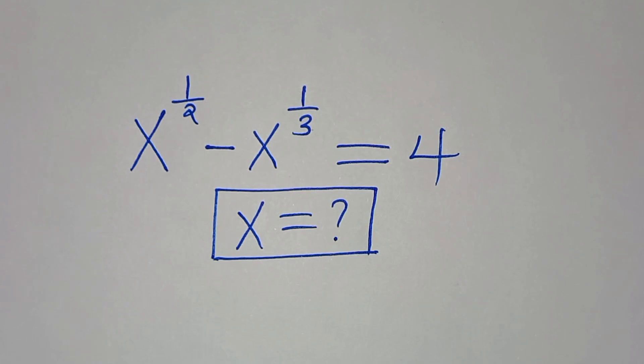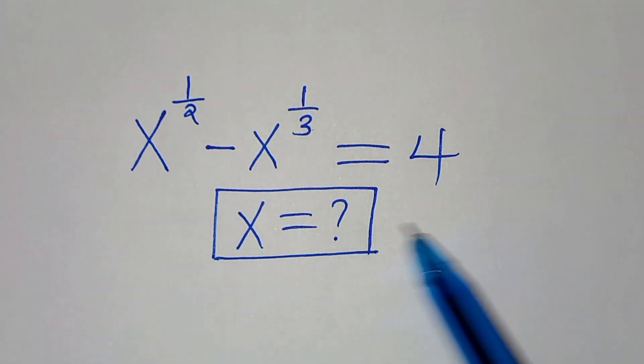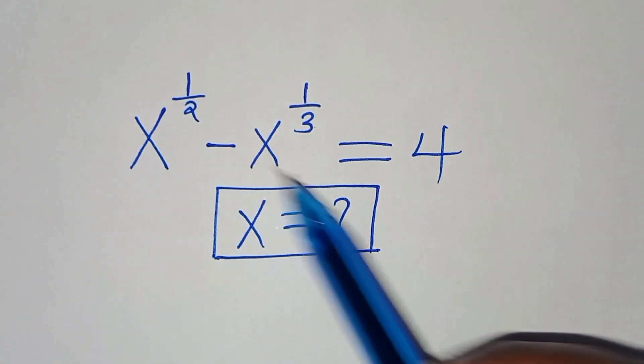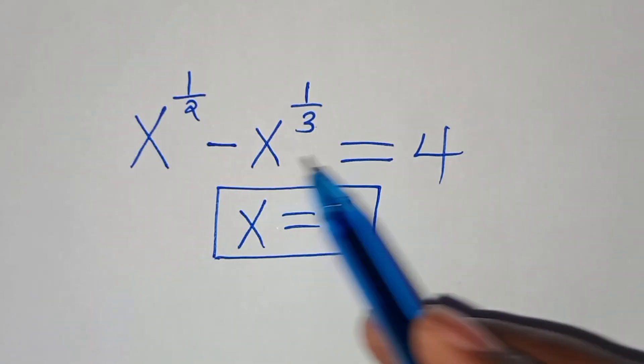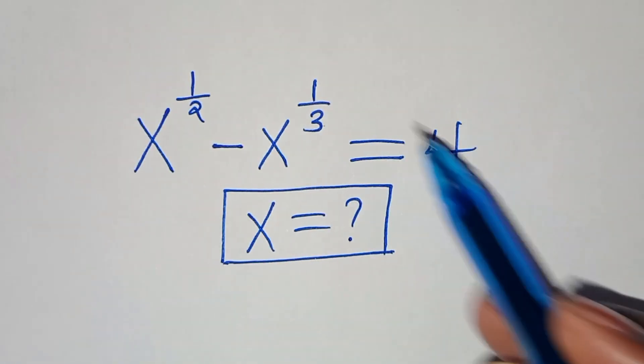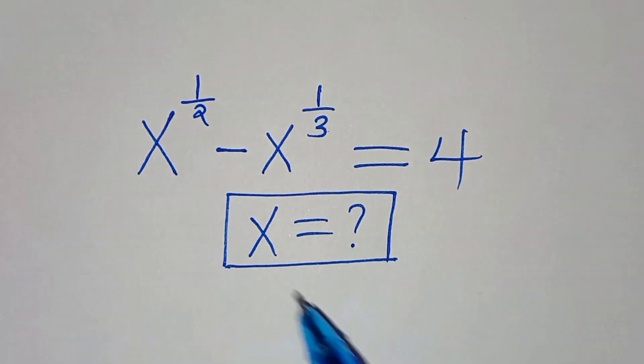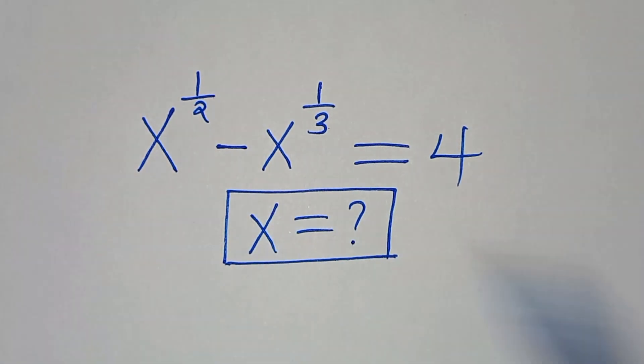Everyone, you are welcome to solve this nice algebra problem, which is x to the power of a half minus x to the power of a third. This is equal to 4. So what is the value of x?